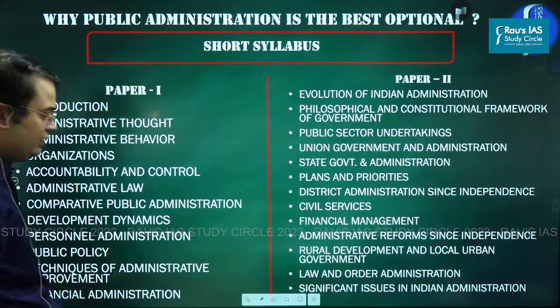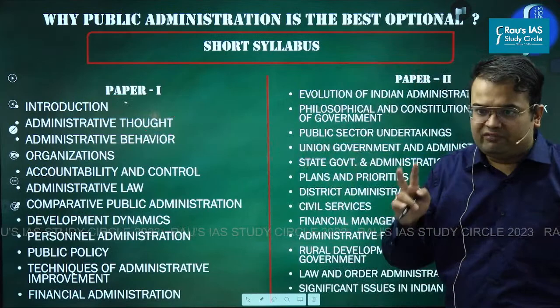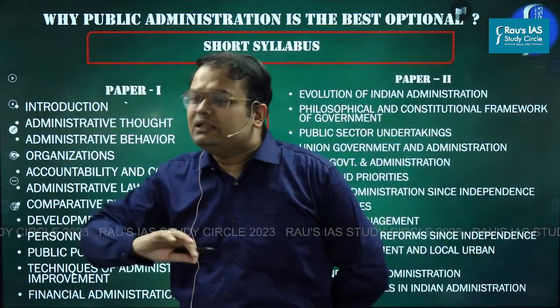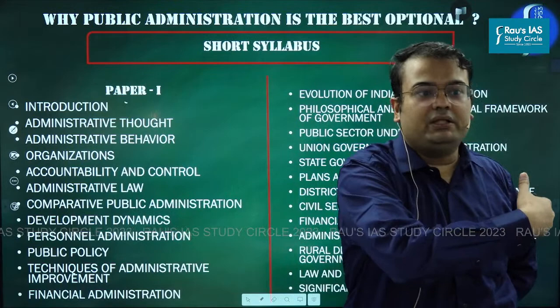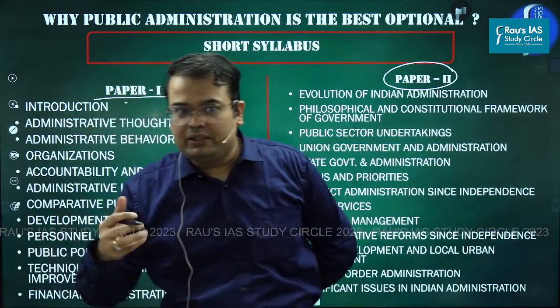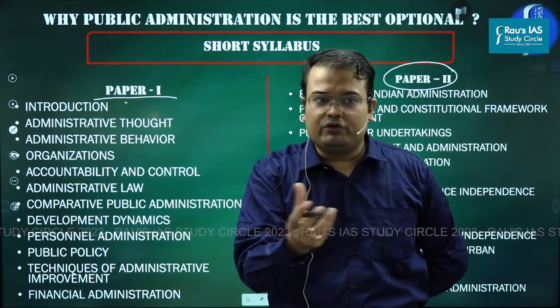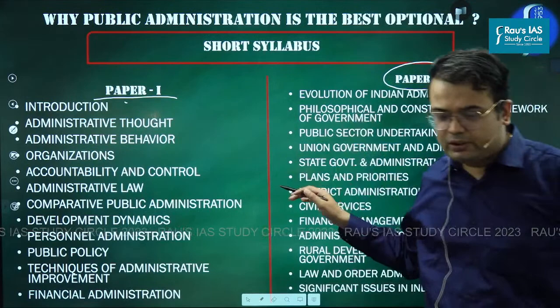Now let's take an overview of the syllabus of public administration. There will be two papers. For humanities optionals, Paper 1 is generally about world-level theory — world administration, thinkers — and Paper 2 is about the Indian context. So in public administration, Paper 1 is theory from a western and comparative perspective, and Paper 2 is a very focused understanding of Indian administration.